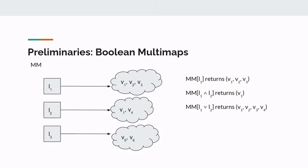A boolean multi-map is associated with a supported class of boolean formulae queries over labels. For our purpose, we only consider conjunctions and conjunctive normal forms. Loosely speaking, logical AND corresponds to set intersections, while logical OR corresponds to set union. In the example, MM of L1 AND L2 returns V1 because the intersection of {V1, V2, V3} and {V1, V4} is {V1}.